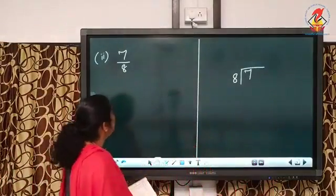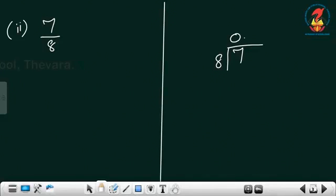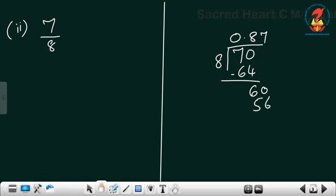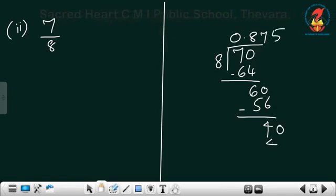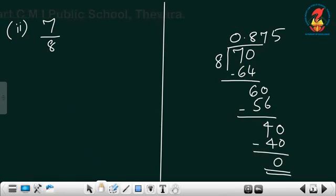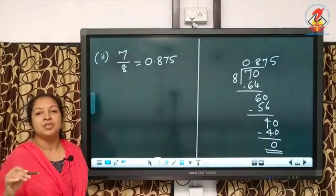The second one is 7 by 8. Dividing: 8 into 70 gives 0, then 8 times 8 is 64, remainder 6; bring down 0 — 60, 8 times 7 is 56, remainder 4; bring down 0 — 40, 8 times 5 is 40, remainder 0. So the decimal expansion is 0.875, which we can say is a terminating decimal.